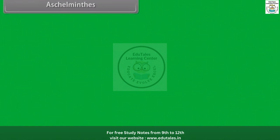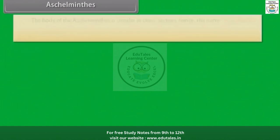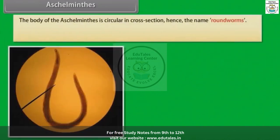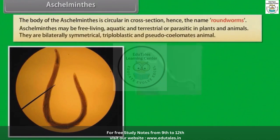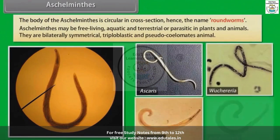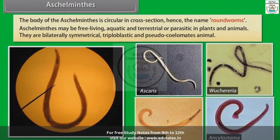The body of Aschelminthes is circular in cross-section, hence the name roundworms. Aschelminthes may be free-living, aquatic and terrestrial, or parasitic in plants and animals.